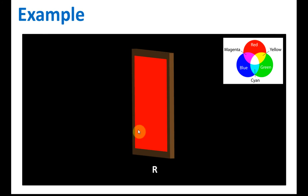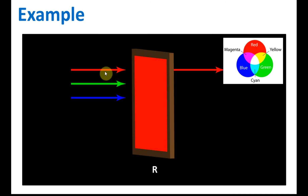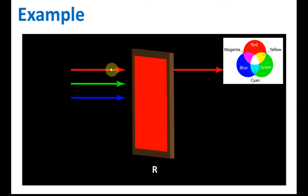Let's say we have a red filter, labeled R. If the three primary colors move towards this filter, only the red color light will be allowed to pass through. The green and blue color light will be blocked, because a color filter only allows the light with the same color to pass through it. So a red filter only allows red to pass and blocks green and blue.